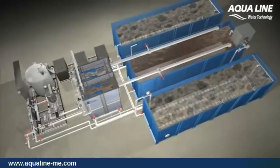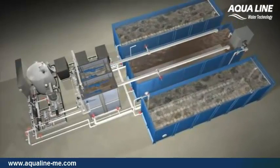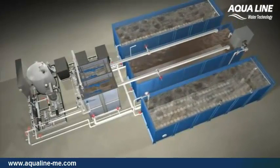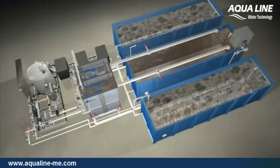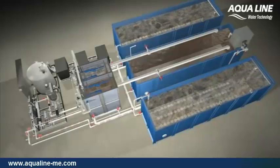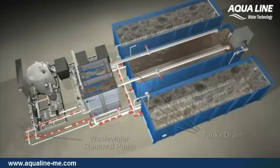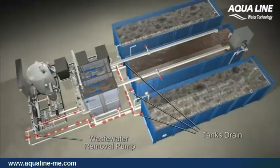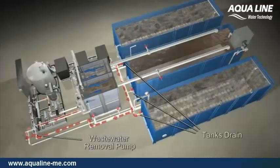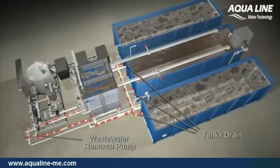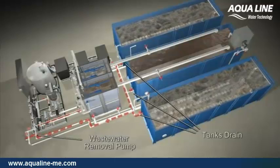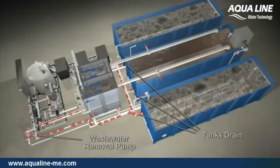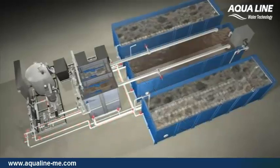Excess biomass or sludge generated from the biological treatment process will be wasted on a periodic basis. To maintain the desired solids concentration within the system, sludge is withdrawn from the bioreactor tanks or membrane tank for proper off-site disposal by licensed haulers.